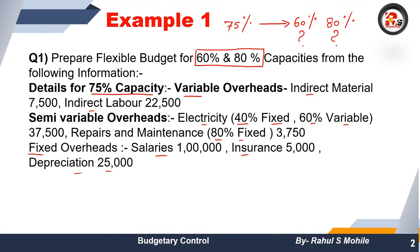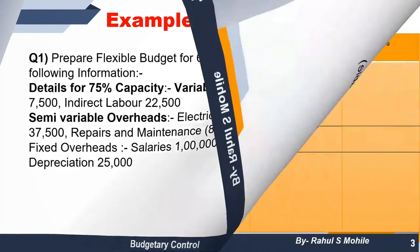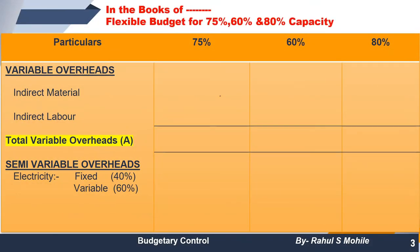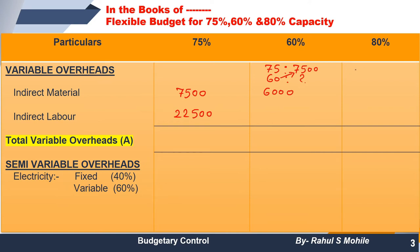We have two variable overhead items: indirect material, which is 7,500, and indirect labor, which is 22,500 at 75% capacity. To find 60% capacity for indirect material: cross multiply — 7,500 multiplied by 60, divided by 75 — that gives 6,000.